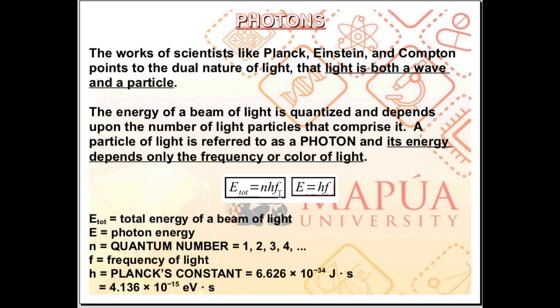H F is the energy of one photon. E photon energy is equal to H F. F here is the frequency of the light. Whereas H is called the Planck's constant, and it's equal to 6.626 times 10 to the negative 34 joule second. And it's also equal to 4.136 times 10 to the negative 15 electron volt second.